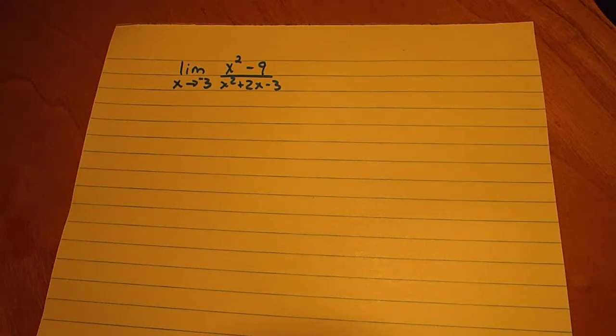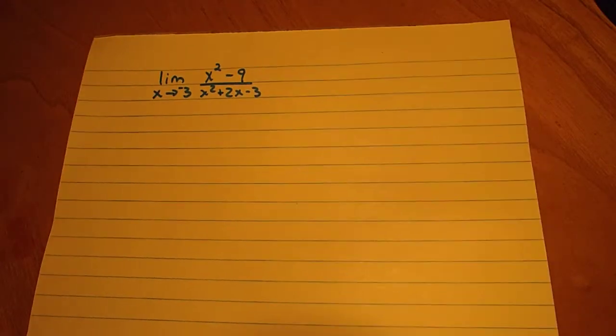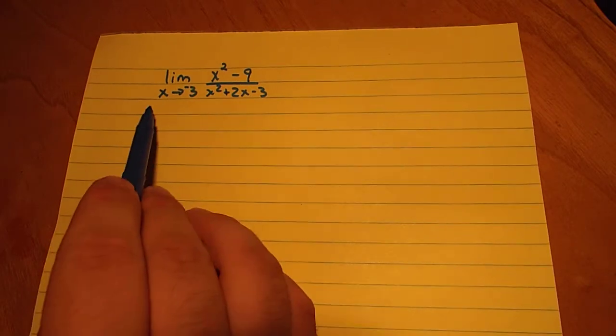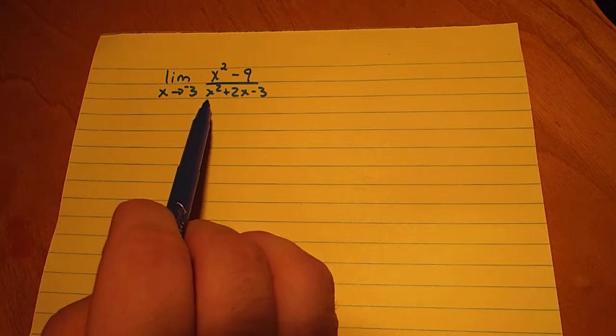Alright, so in this video I'm going to solve the limit as x approaches negative 3 for x squared minus 9 over x squared plus 2x minus 3.